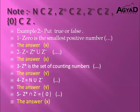Before solving Example 2, let's remember the subset relationships. Natural numbers N is a subset of integers Z. Z positive is a subset of Z. Z negative is a subset of Z. The set {0} is also a subset of Z.